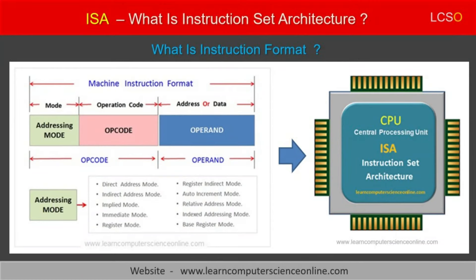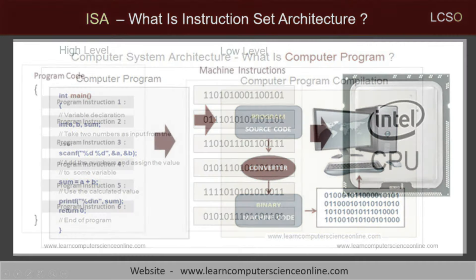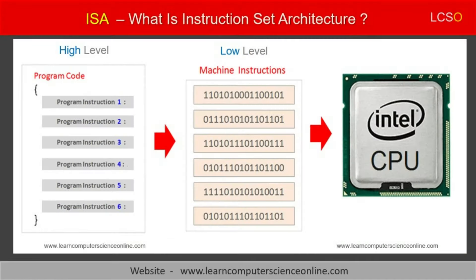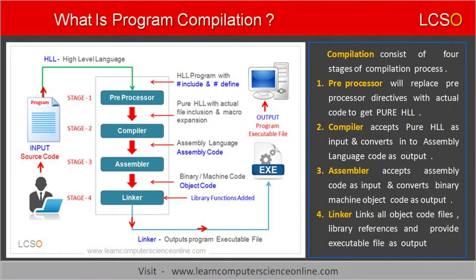The instruction format is another important design concept that is part of the processor architecture. The computer program consists of a set of instructions which directs the CPU to perform some specific operations. However, the computer can execute only low-level machine instructions in the binary format, and therefore all high-level programs are first compiled with the help of a special software called the compiler.